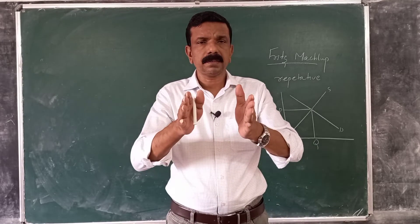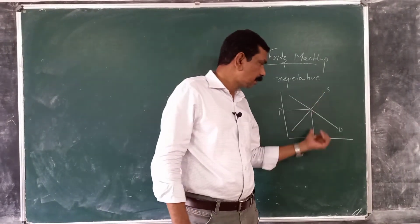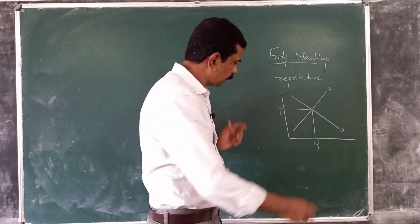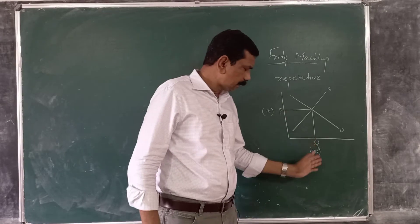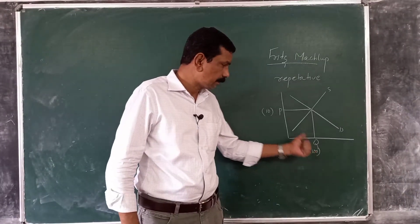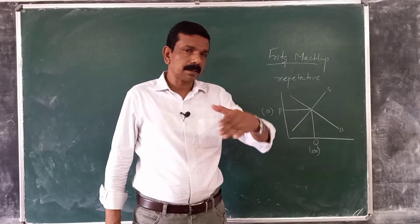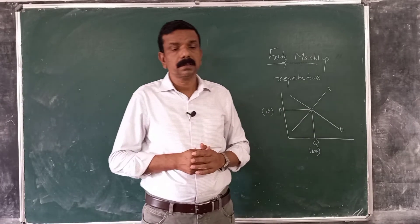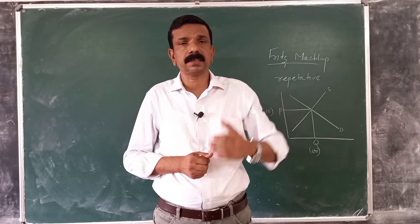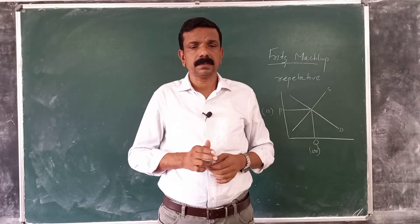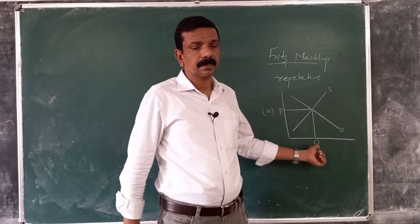If you define supply and demand per time period — per month, per year, etc. — then there will be equilibrium in each period. For example, if price is 10 and quantity is 100, when we say equilibrium is maintained, it simply means sellers are coming every day with 100 units and buyers are purchasing 100 units at price 10. So economic forces of a repetitive nature are taking place, and price and quantity are not affected.